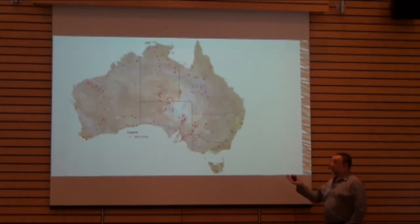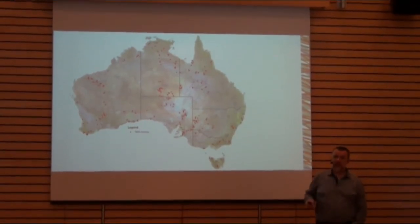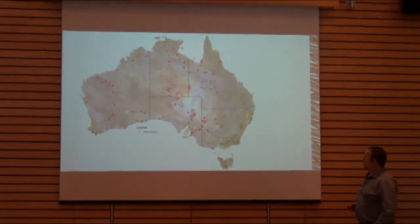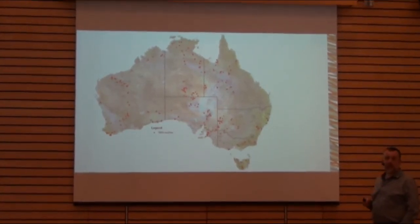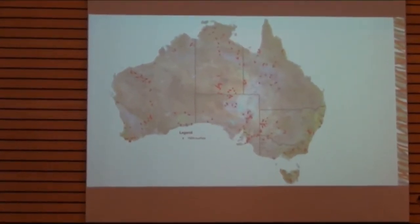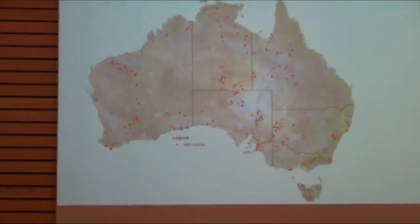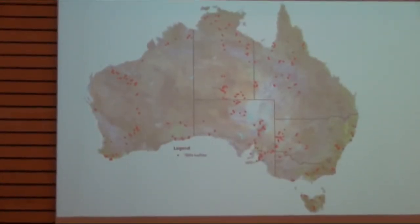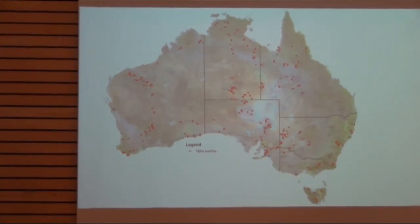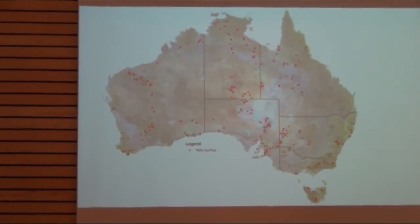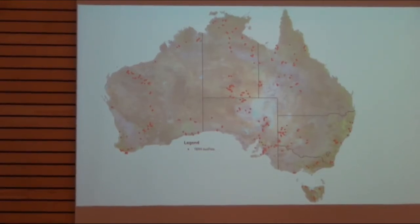These red dots show where the program is spatially at the moment. We've collected across a huge range of Australia's environments. When you put that into environmental space, you'll see it covers a reasonable amount of the variability of Australia, though there's still a lot more work to do. We're about to start analysis of gaps, but it's a particularly extensive program.